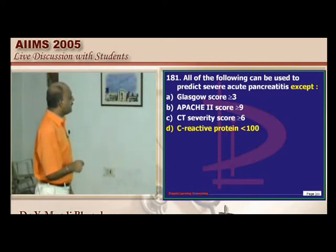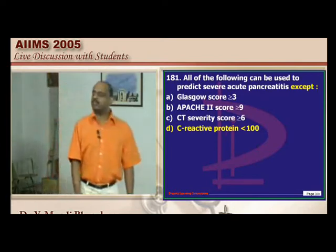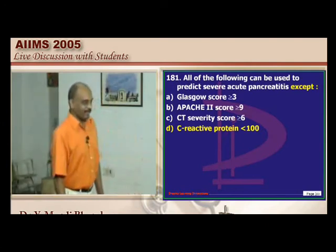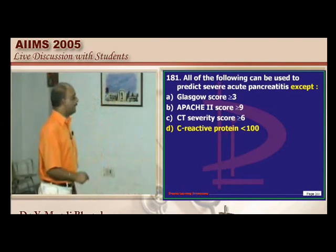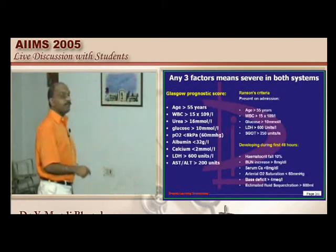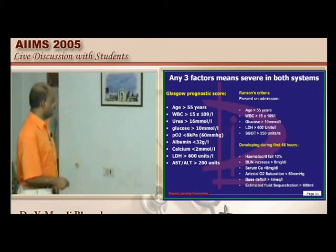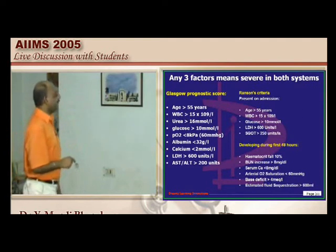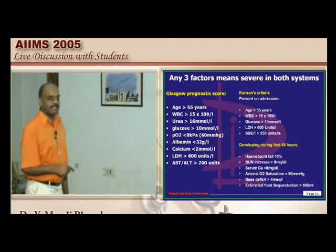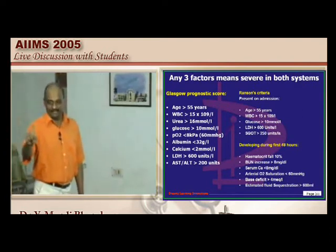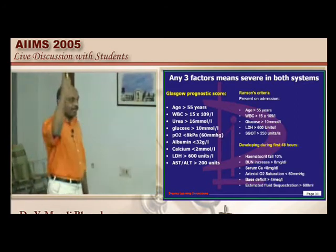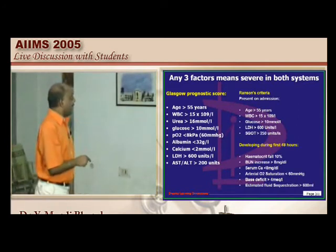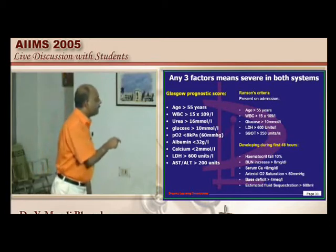Acute pancreatitis is graded using various scales — Glasgow scale is used not only in coma but also in pancreatitis. Ranson's criteria include WBC count, glucose, LDH, and GOT. Amylase is only diagnostic and not part of Ranson's criteria. Criteria at admission differ from those in the first 48 hours.